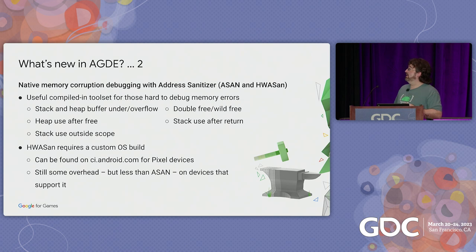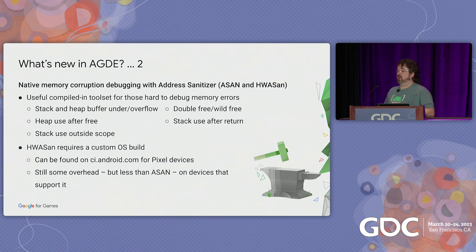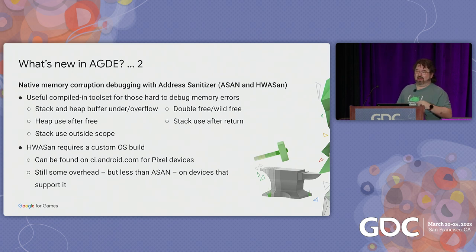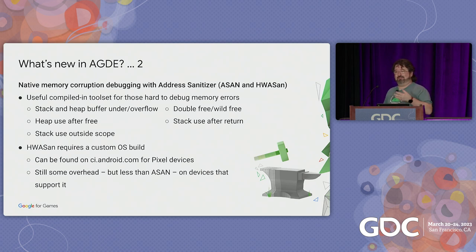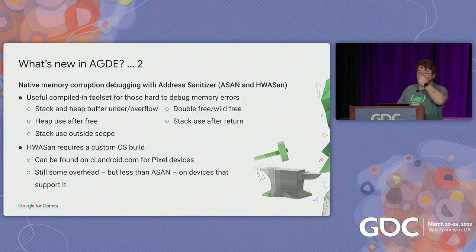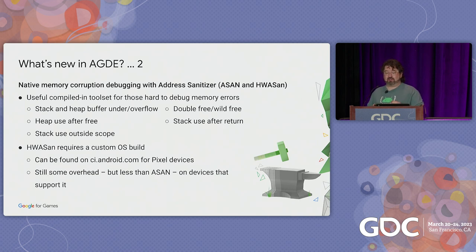We're adding support for native memory corruption debugging with Address Sanitizer and Hardware Address Sanitizer. These tools are compiled into your code and allow you to analyze usually hard-to-debug memory corruption issues — for example, stack and heap buffer overflows, double free, wild free, things like that. Address Sanitizer is quite heavyweight — it will make your code about two times slower. Hardware Address Sanitizer doesn't have quite the same impact, though there's still a cost. It does require a special build of the OS installed on your phone. If you've got a Pixel device, you can find that on ci.android.com; for other devices, talk to your manufacturer.